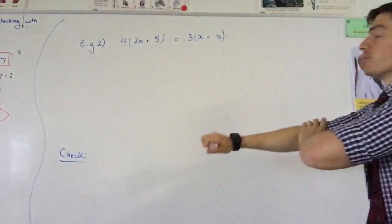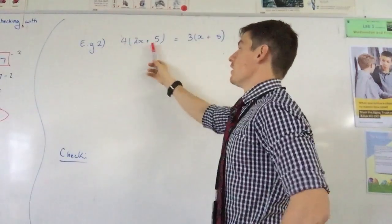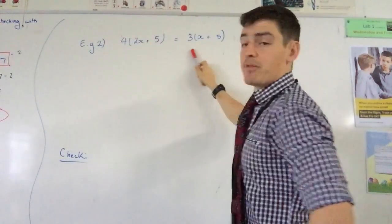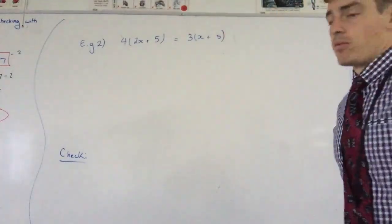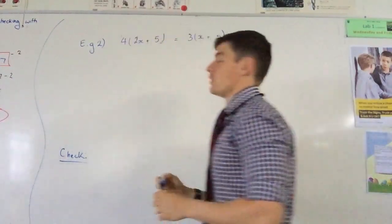Alright, so this example is a little bit similar, but it's a little bit different. In this case we've got something outside of a bracket multiplying in, and we've got x's on both sides of the equation. So that's a little bit tricky, it's something we've got to deal with in this problem.